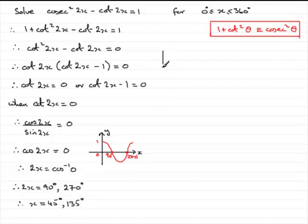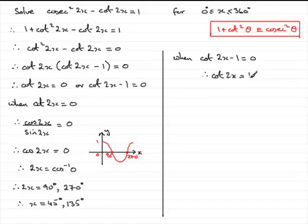Now we'll work out when cot 2x minus 1 equals 0. If we add 1 to both sides, we've got cot 2x equals 1. We should know that cot 2x for something like this is best changed to 1 over tan 2x. So we've got 1 over tan 2x equals 1, and if we rearrange this, we end up with tan 2x equaling 1.